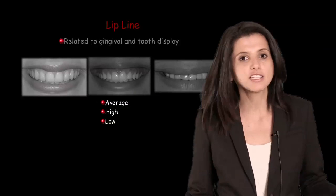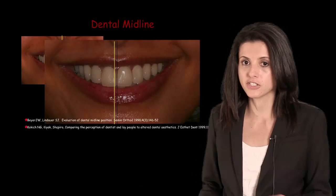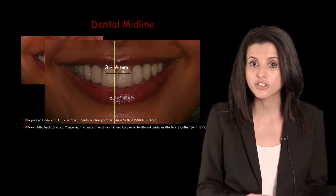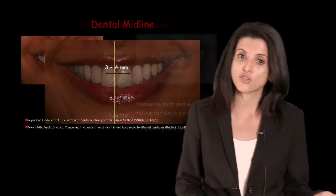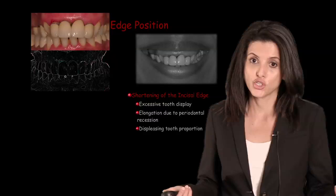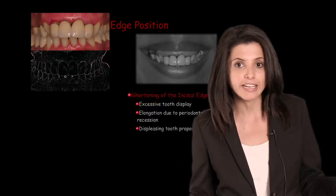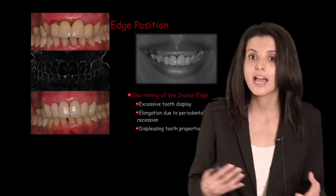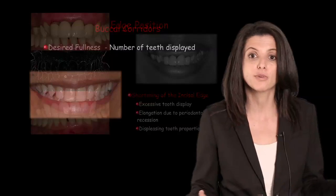In cases where we have excessive gingiva and we're not quite sure what to do about it. In cases where the midline is deviated — should we orthodontically treat it or should we be treating this patient from a restorative point of view? Should we be doing crown lengthening surgeries and create gigantically long teeth, or can we move the incisal edge position functionally as well as aesthetically without creating a problem?